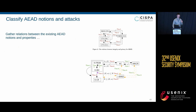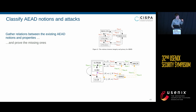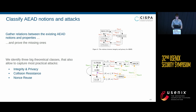When classifying the notions and attacks, we saw many definitions and properties out there and tried to connect them. For those where we could not find relations in the literature, we proved the missing ones — shown in the picture with green tags on the lines. From these relations, we identified three big theoretical classes capturing most attacks: attacks on integrity and privacy, attacks with collisions, and attacks by misusing nonces.